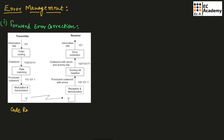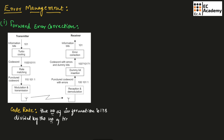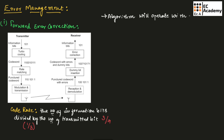In forward error correction, the code rate is fixed. The code rate is the number of information bits divided by the number of transmitted bits. Since the number of information bits is 3 and the number of transmitted bits is 9, the code rate is 3/9, which equals 1/3. The forward error correction algorithm operates with this fixed code rate.